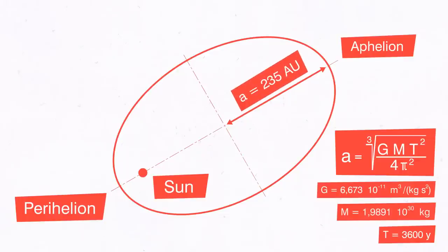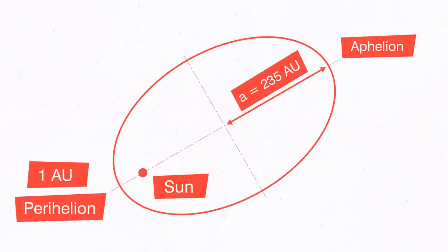Since Nibiru believers seem a bit incoherent on this matter, I will assume that at perihelion Nibiru comes to within one astronomical unit of the Sun. Consequently, the aphelion would reach 469 astronomical units into space.